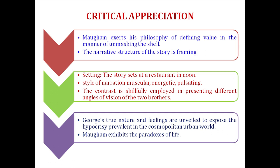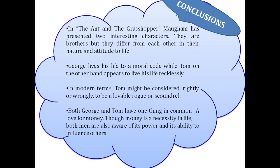The Setting. The story is set at a restaurant at noon. By reversing the storyline of the fable, Maugham exhibits the paradoxes of life. Conclusions. In The Ant and the Grasshopper, Maugham has presented two interesting characters who are brothers but differ in their nature and attitude to life. George lives his life according to a moral code, while Tom lives recklessly. Both George and Tom have one thing in common: a love for money. Though money is a necessity in life, both men are aware of its power and its ability to influence others.